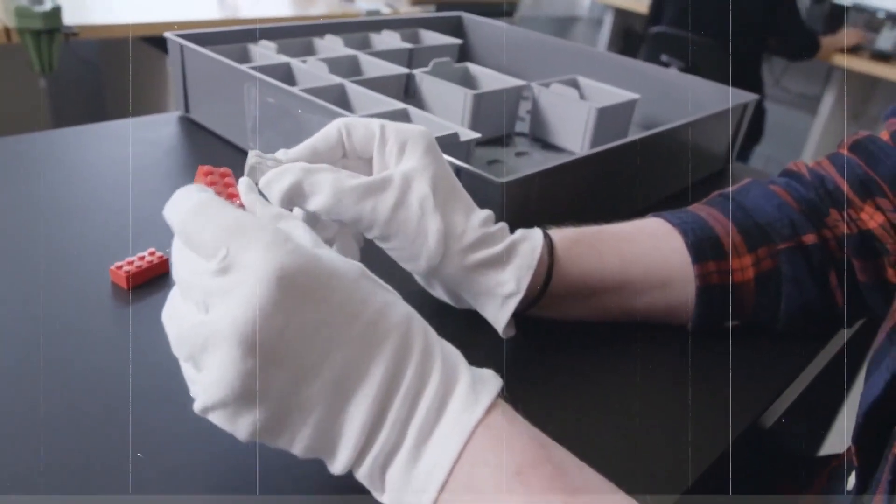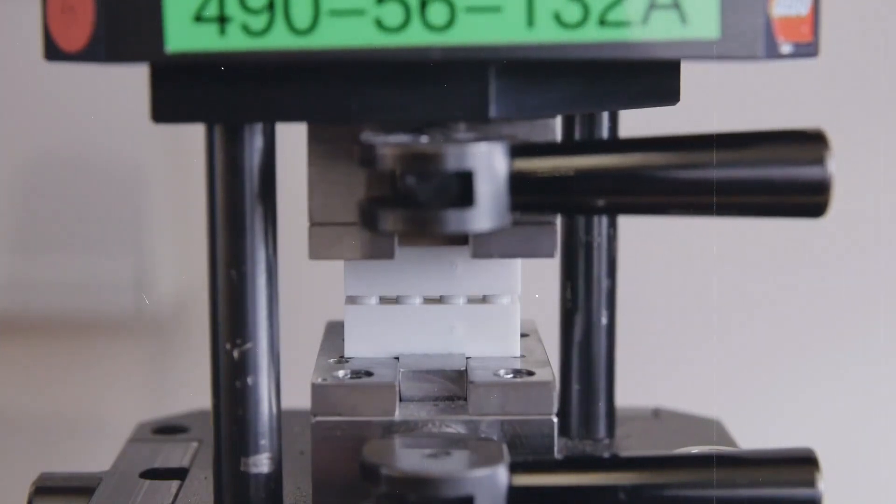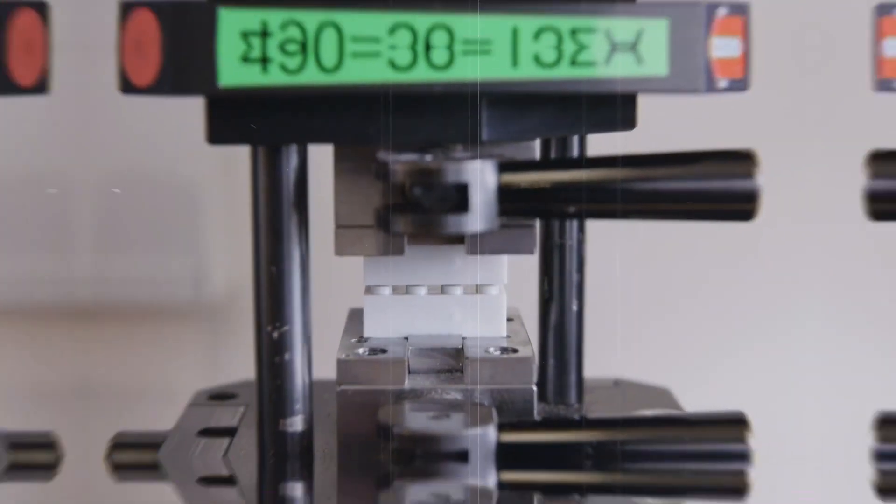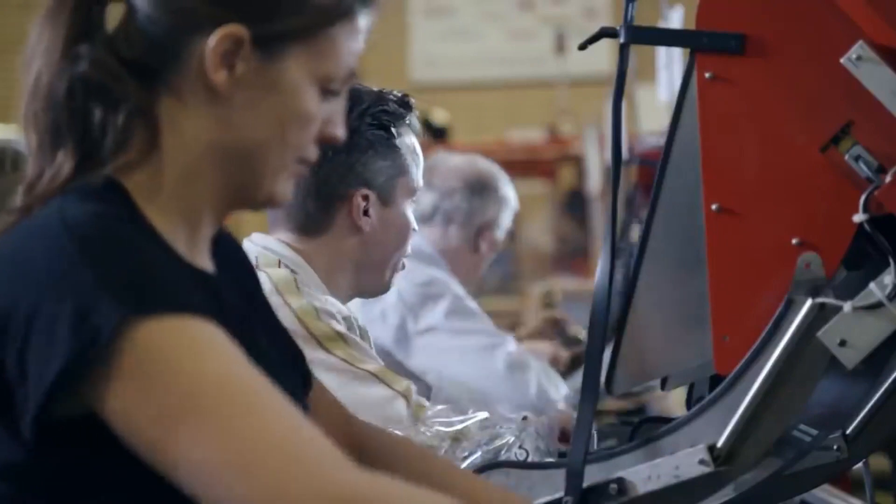Next, the bricks are sorted by color and shape. This step is done using automated machines that can sort thousands of bricks per hour. The sorted bricks are then packaged into sets. Each Lego set is carefully designed and includes instructions to help builders create specific models.